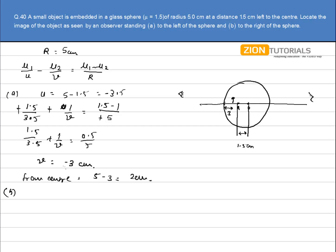Similar for another case, that is if the person is standing on the right hand side. So the object distance will be 5 plus 1.5, that is 6.5, minus with sign convention.